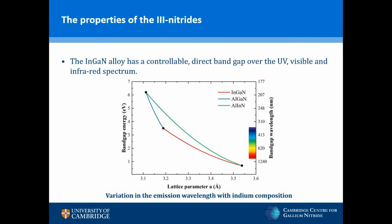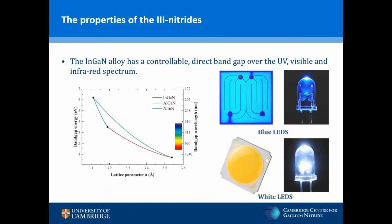The three nitrides have a direct band gap that extends from 6.2 eV for aluminium nitride in the ultraviolet region over the entire visible spectrum, then to 0.7 eV for indium nitride and into the infrared. They show particularly high efficiencies over the blue spectral region and led to the very first high-efficiency blue LEDs. With the inclusion of phosphor converters, this led to high-efficiency white LEDs with superior energy efficiencies, reductions in air pollutants and greenhouse gas emissions, for which Nakamura, Amano and Akasaki won the 2014 Nobel Prize for Physics.